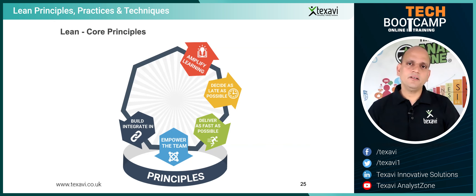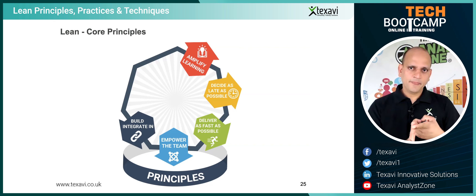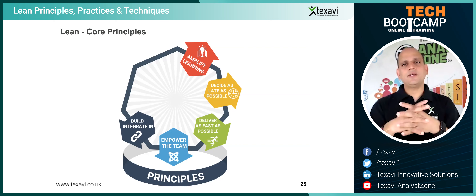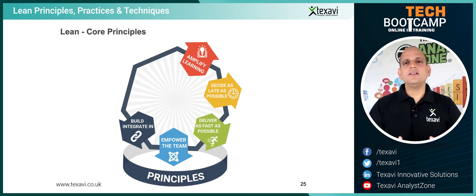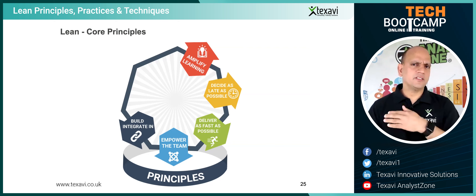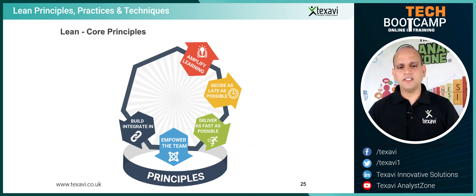Going back to what we've been talking about all along — agile software is about continuous development. When you develop continuously, you need to integrate continuously, so continuous integration. And once you develop and integrate continuously, continuous delivery follows naturally. Continuous development, continuous integration, and continuous delivery — this is basically the mantra of agile software development, whether it is Scrum, Kanban, Lean, DSDM, XP, or whatever.